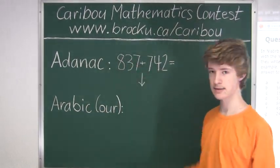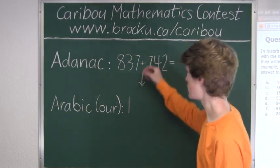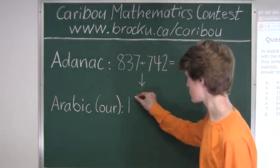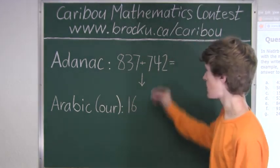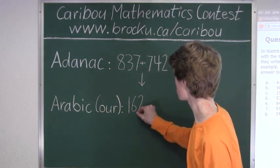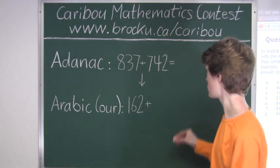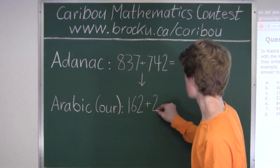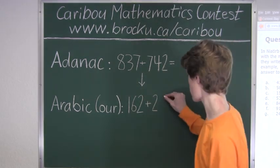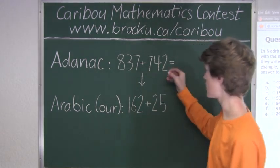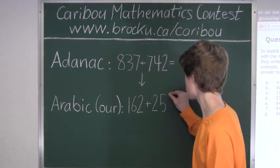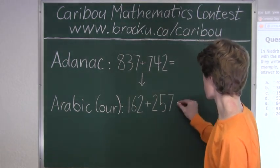9 minus 8 is 1. 9 minus 3 is 6. 9 minus 7 is 2. 9 minus 7 is 2. 9 minus 4 is 5. And 9 minus 2 is 7.